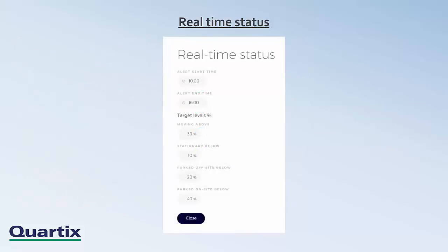The image now displayed shows the configuration parameters for this component. The alert start time is the earliest time at which the alert will be displayed. The alert end time is the latest time at which the alert will be displayed. Moving above is the target percentage of vehicles to be considered moving at the current time — if the percentage falls below this value, then there will be an alert condition. Stationary below is the target percentage of stationary vehicles — if the percentage value goes above this, then there will be an alert condition. Parked off-site below is the target percentage of vehicles parked off-site — if the percentage value goes above this, there will be an alert condition.